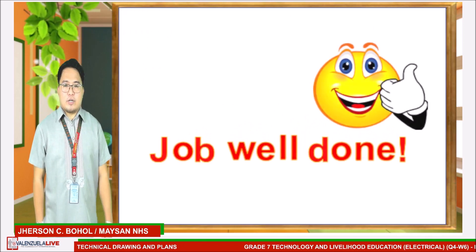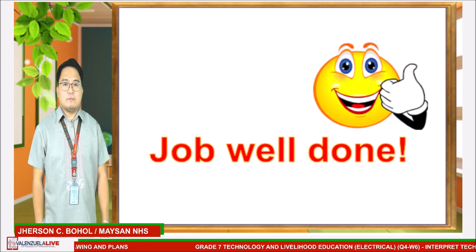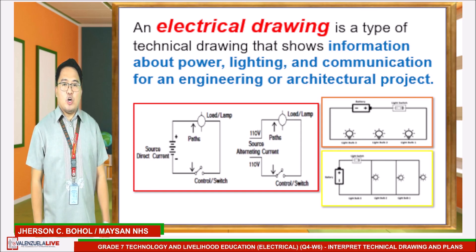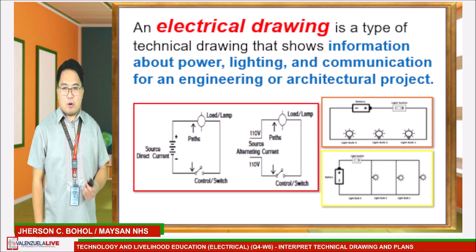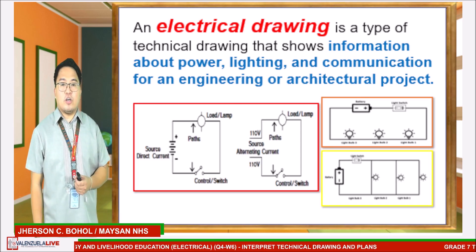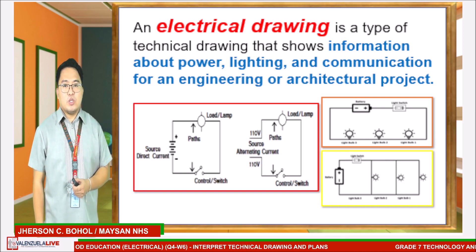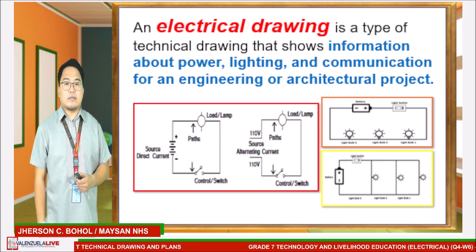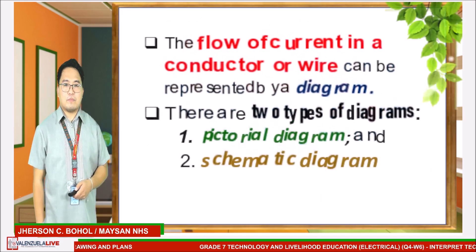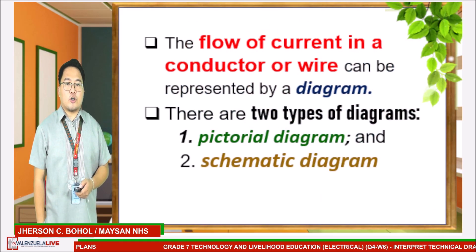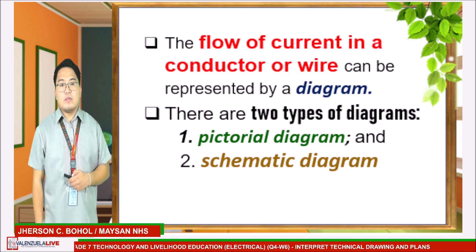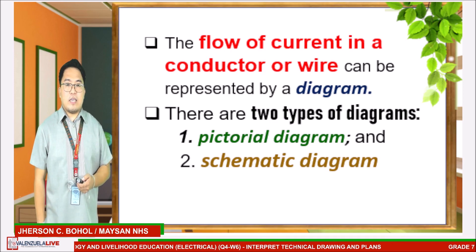Good job, learners. Moving on to our topic. An electrical drawing is a type of technical drawing that shows information about power, lighting, and communication for an engineering or architectural project. Knowing how to read and interpret various types of electrical drawings are essential skills that all electrical workers must possess to effectively carry out their tasks. The flow of current in a conductor or wire can be represented by a diagram. There are two types of diagram: pictorial diagram and schematic diagram.